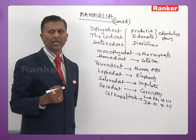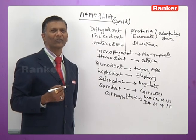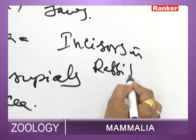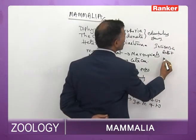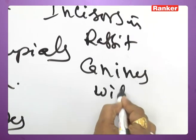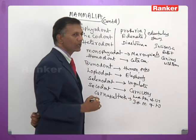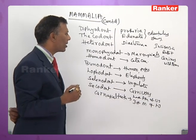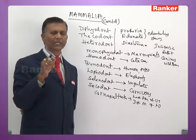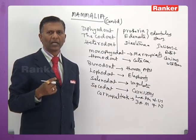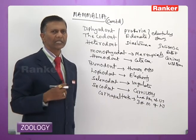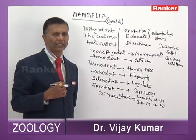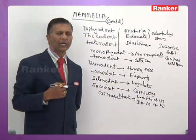In certain mammals, persistent pulp teeth are present — that is, teeth that grow throughout life. Examples include incisors in rabbits, canines in wild boars, and premolars in elephants. The teeth that grow throughout life are called persistent pulp teeth or rootless teeth. These teeth have a broad root with a wide aperture at the tip, allowing nutrients to be supplied throughout life.